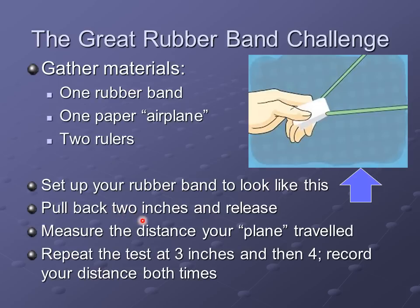For the first trial, pull the paper back about two inches from the starting point, then release it and measure the distance the paper traveled. Repeat this two more times: on your next trial, pull the rubber band back three inches and measure how far it goes, then do it one last time pulling back four inches and measure how far the paper goes. Once you've got your data recorded on your notes, go ahead and unpause the video.